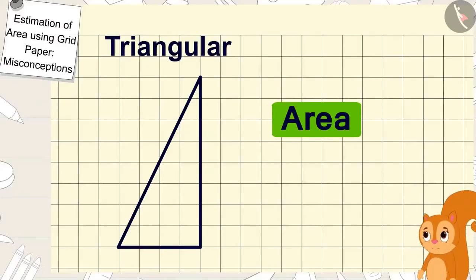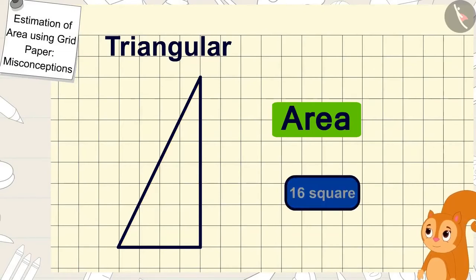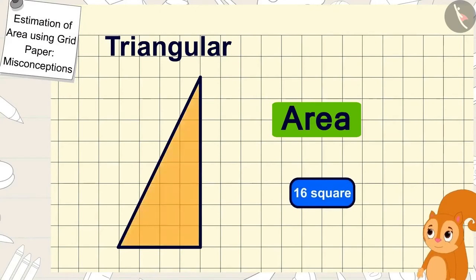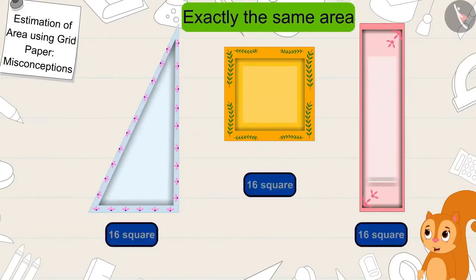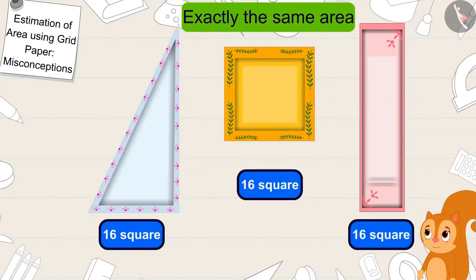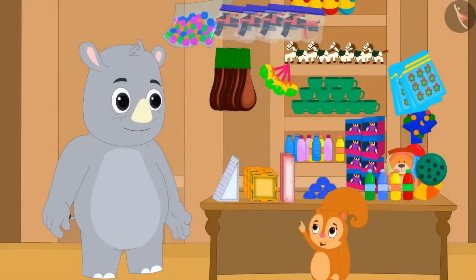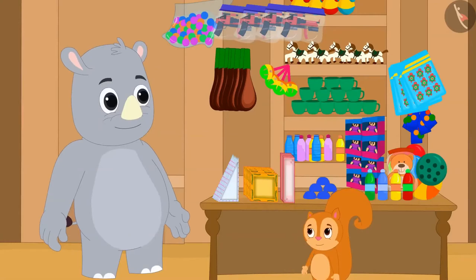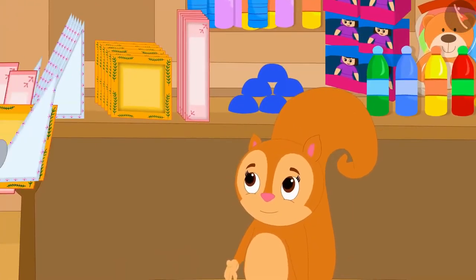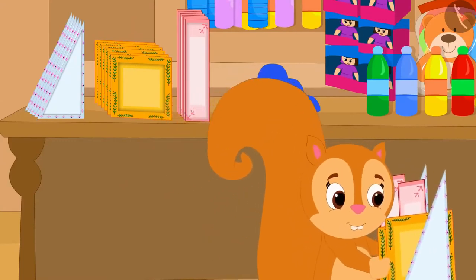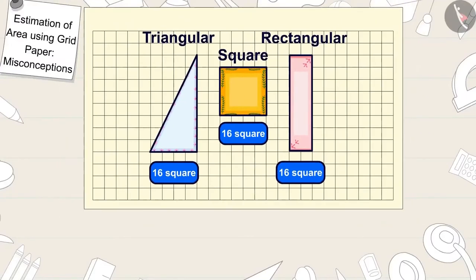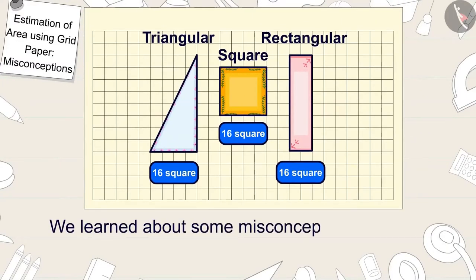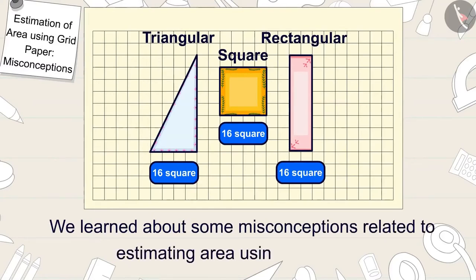Chanda too found the area of the triangle shaped plate. Hey Gaggu, there are 16 squares in the area of this triangle shaped plate too. You are right — the shapes of these plates may be different, but their areas are exactly the same. The plates of these three shapes are very beautiful. Give me plates of all three shapes, said Chanda, and bought plates of all three shapes from Gaggu. Children, in this video we learned about some misconceptions related to estimating area using grid paper.